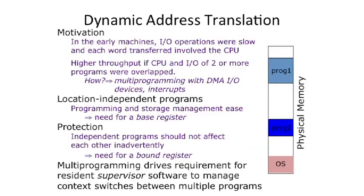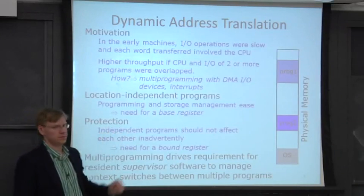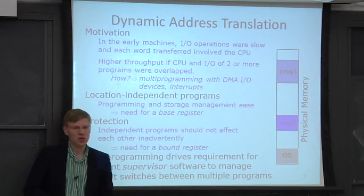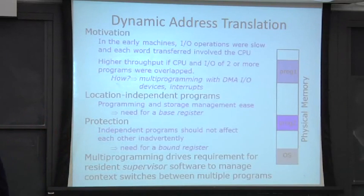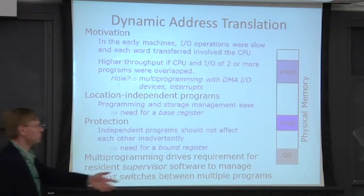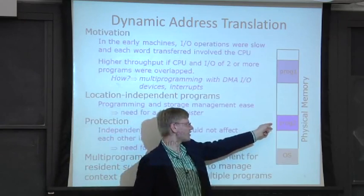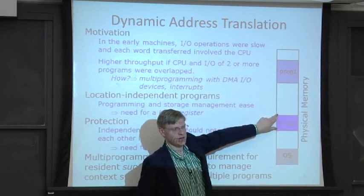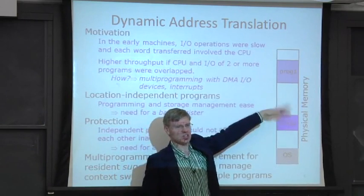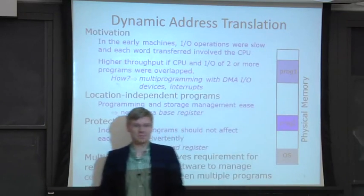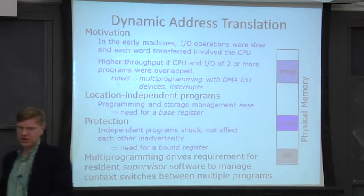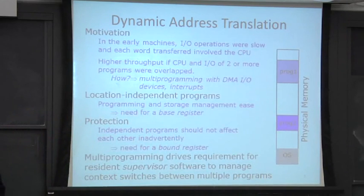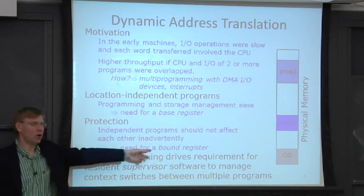You could extend this a little bit and even actually add some notion of protection. So you could add something which says program two here is only allowed to access up to this location or this offset in itself. And past that point, it is not allowed to go access anything. Well, that's actually pretty easy to go do. And we're going to call that a bound register.